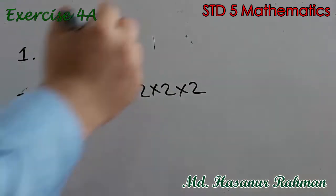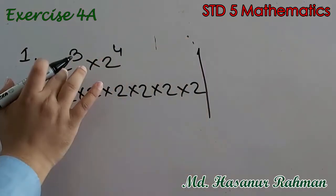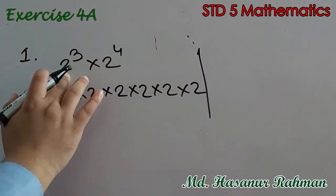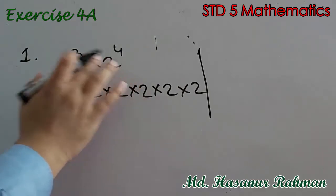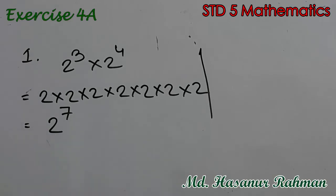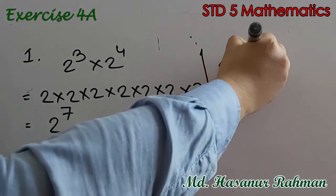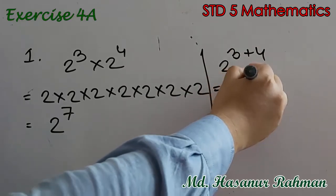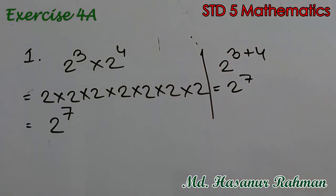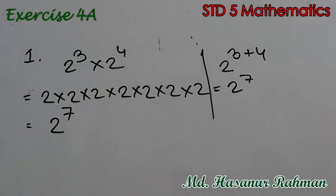The other way we can solve this type of problem: when you see there is a base and both bases are the same, then you can add the powers if there is a multiplication sign. That means 2 to the power 3 plus 4, and that is 2 to the power 7. So you can solve this problem either way — both are similar.